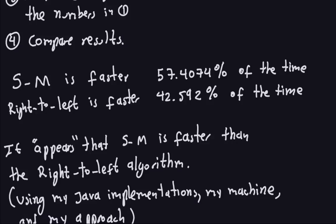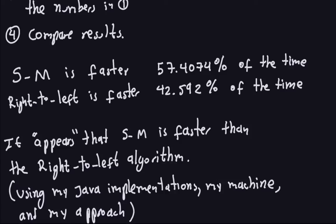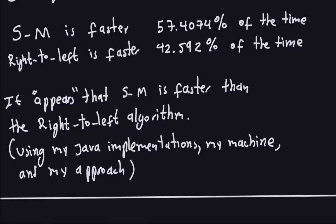This comes as a little surprise, because if you look at the right-to-left algorithm, it doesn't need to compute the binary representation of the exponent, while the square-multiply algorithm does. This might happen for many reasons — perhaps because I'm using the binary representation coming from Java's square-multiply implementation, which may be faster than what I'm doing in the right-to-left version. Of course, this is not a complete comparison of the algorithms; it's just scratching the surface, but this comparison suggests the square-multiply algorithm is faster.